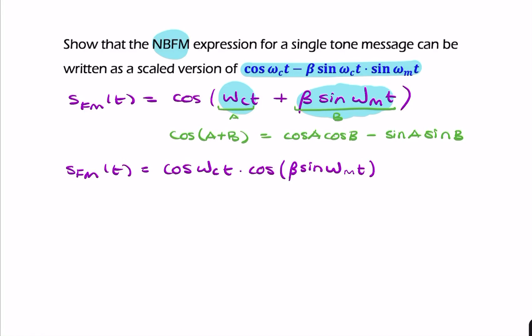Then I have minus sin ωct times sine of the whole thing again, sin(β sin ωₘt).